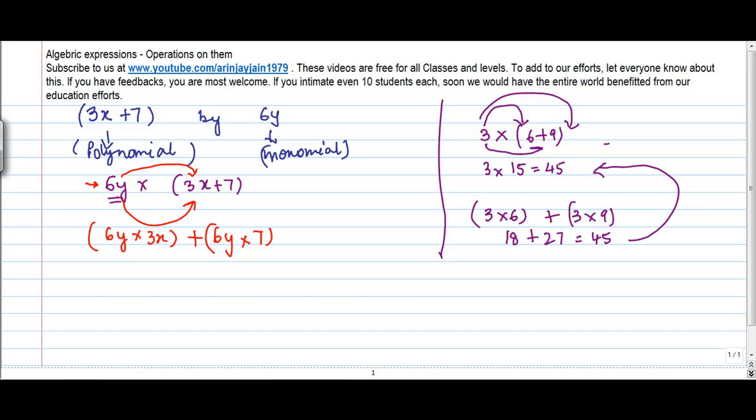So whatever is the monomial that you have, each monomial has to be multiplied by each of the terms which is there in a polynomial.